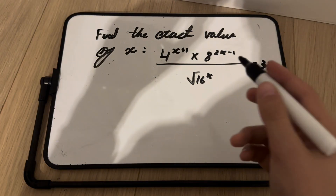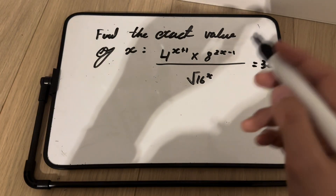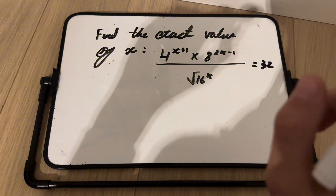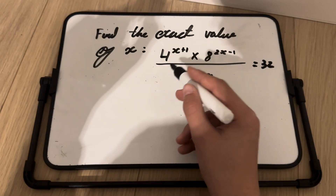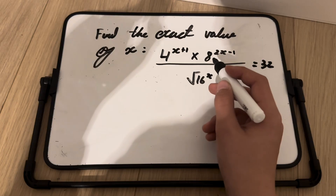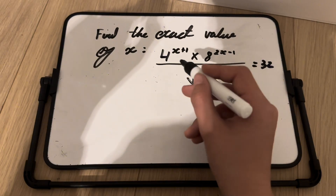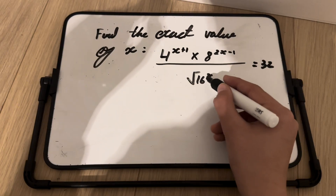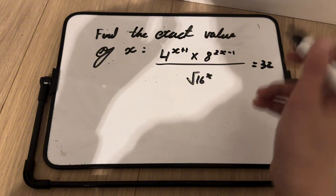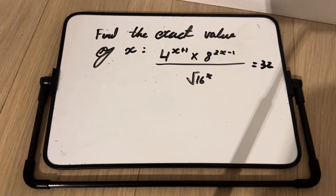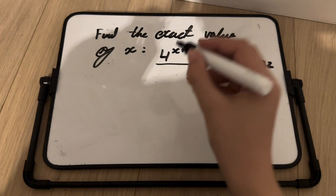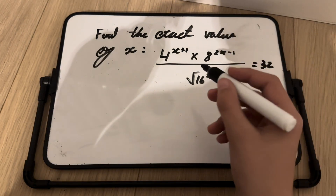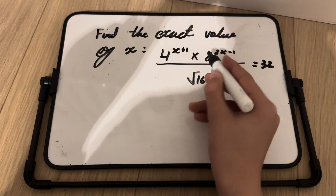This is a slightly more difficult indices problem. Find the exact value of x for: 4^(x+1) × 8^(2x−1) divided by √(16^x) equals 32. Pause now if you'd like to find the answer yourself — otherwise I'll explain the solution.